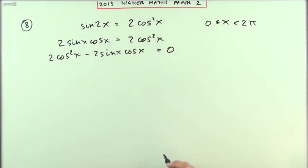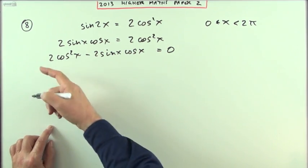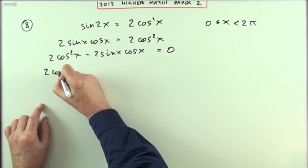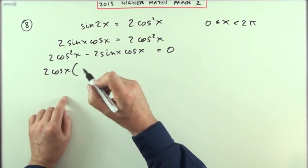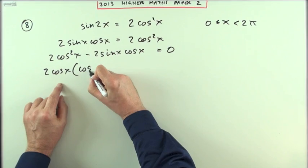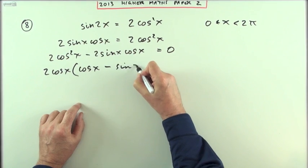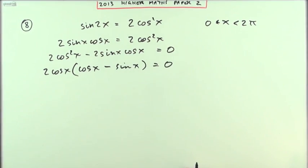There's a common factor, there are two common factors: there's a number and a cosine. So I'll take out the 2 and I'll take out the cos. That will leave me a cos x for the first term, but then it leaves me a sin x for the second term. You might have been startled when you got that, because you don't see that quite so often in these questions, but you just proceed as normal.